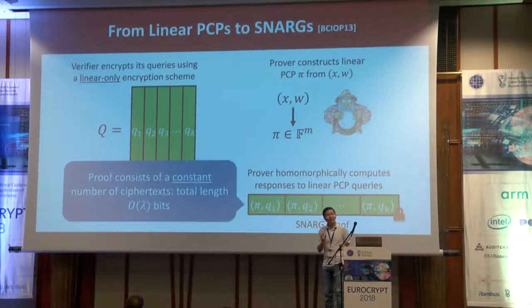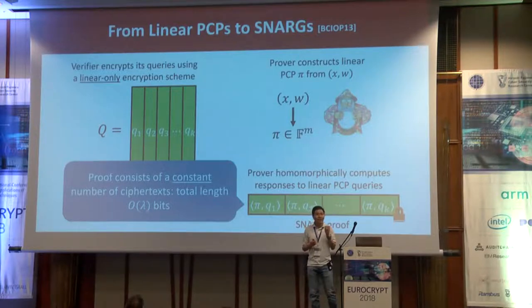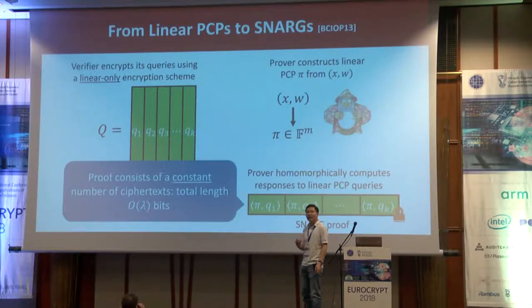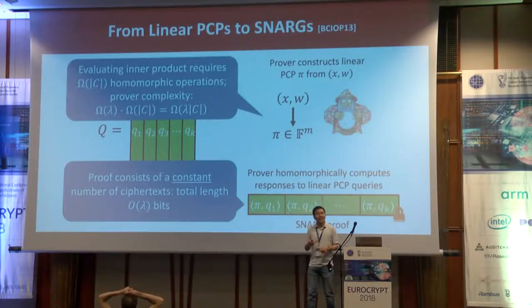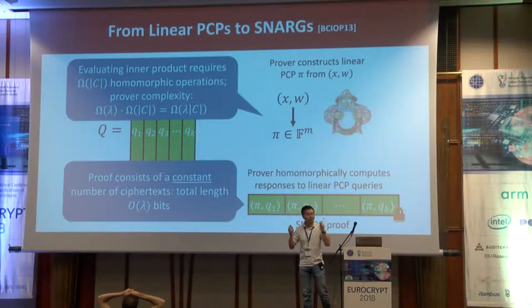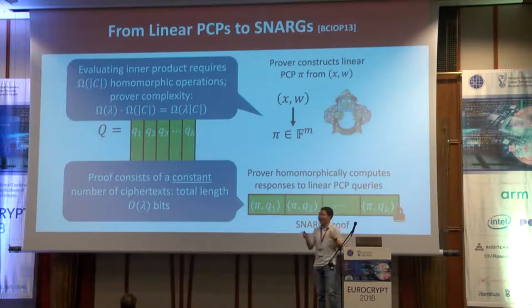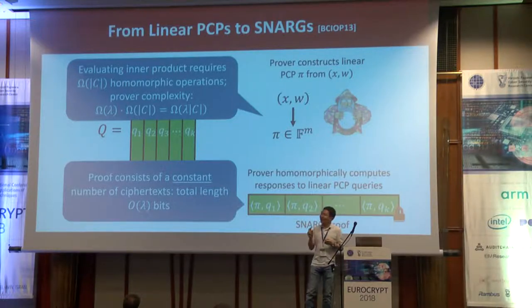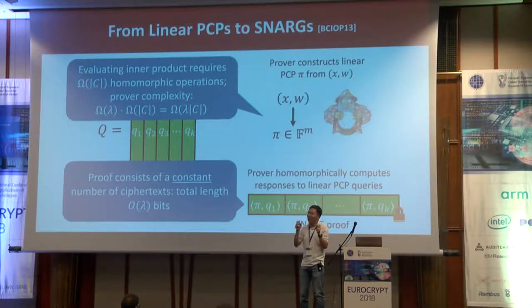If the number of queries the verifier makes is constant — something satisfied by existing linear PCP instantiations — then the SNARK proof contains a constant number of ciphertexts. If we use an encryption scheme providing λ bits of security, the resulting SNARK proof consists of a constant number of ciphertexts and therefore the length is linear in the security parameter. However, considering the prover complexity: the prover must evaluate all inner products between its proof vector and all encrypted query vectors. Since the linear PCP length is linear in the circuit size and each ciphertext is λ bits long, the amount of work the prover has to do is essentially λ times the circuit size — the prover overhead is multiplicative in the security parameter.